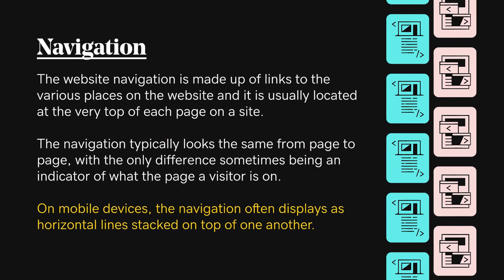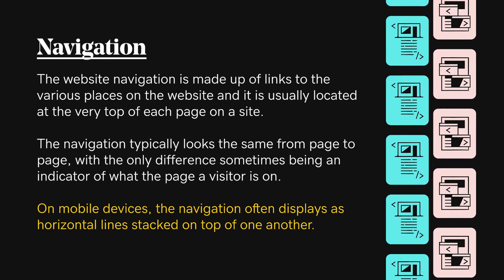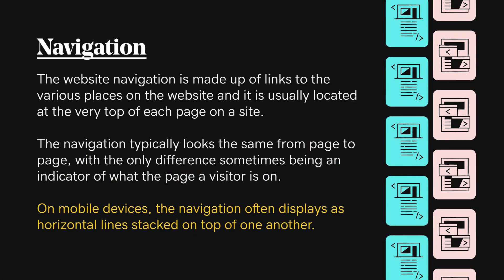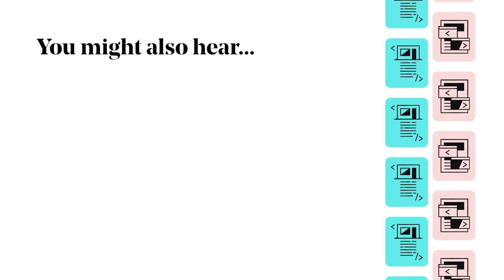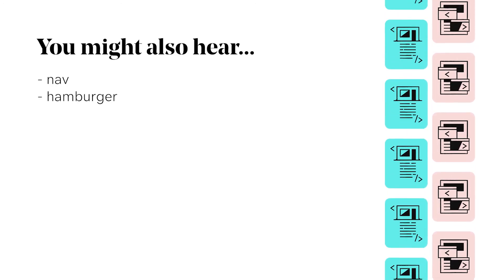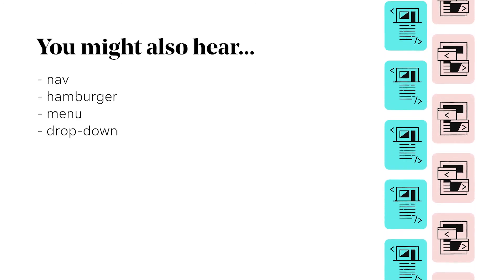On mobile devices, the navigation often displays as horizontal lines stacked on top of one another. You might also hear it called a nav, hamburger menu, or drop down.